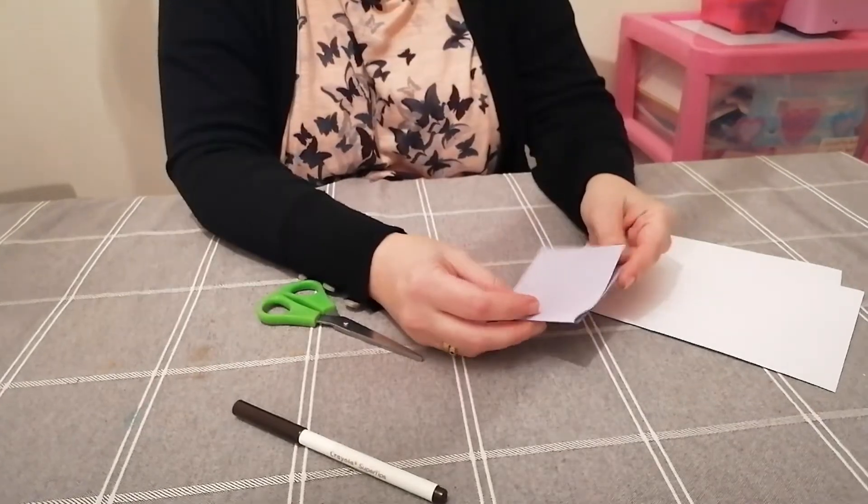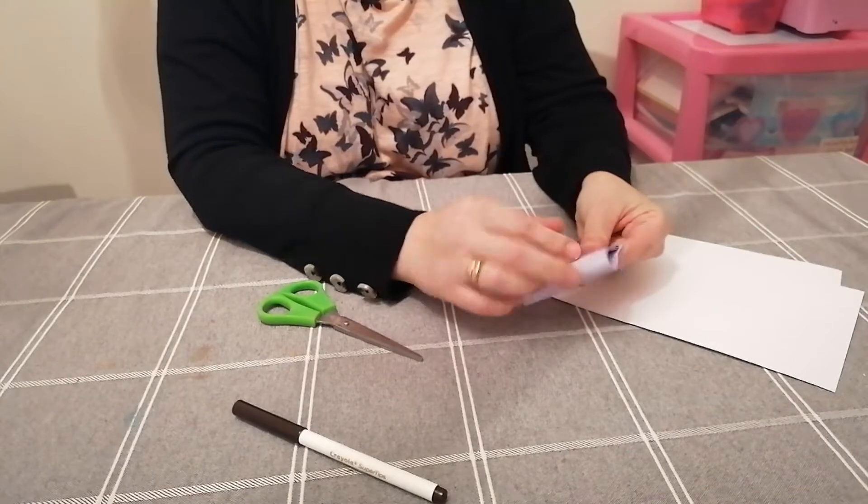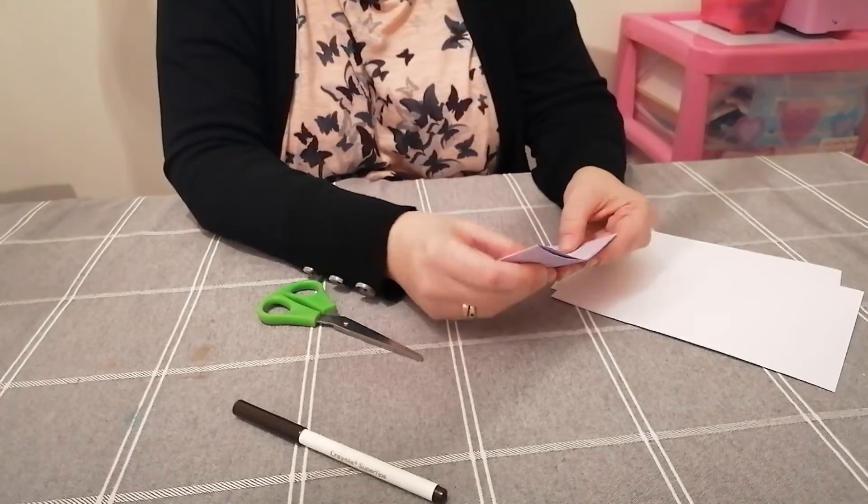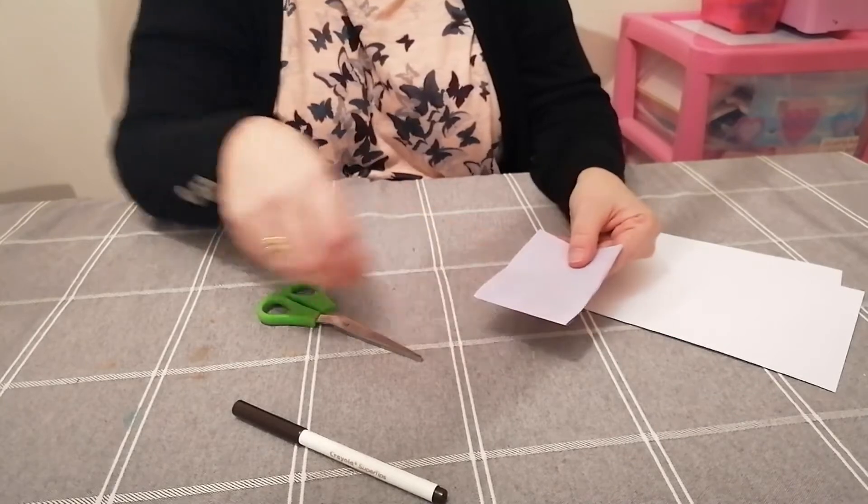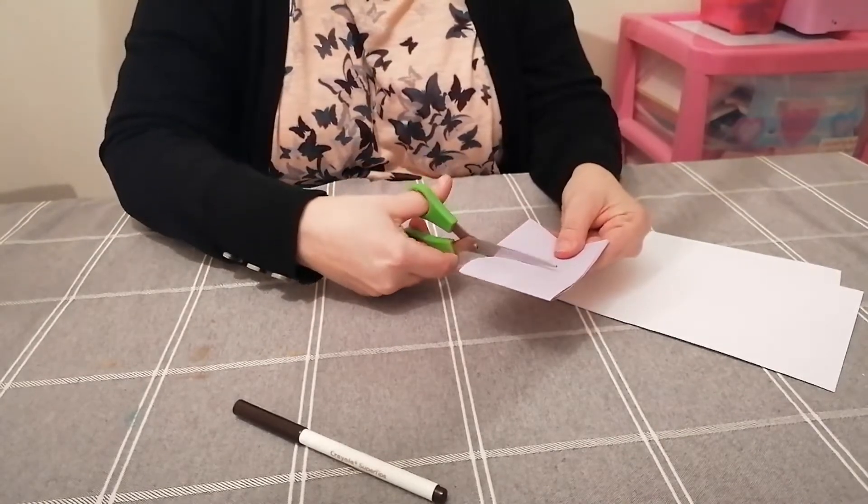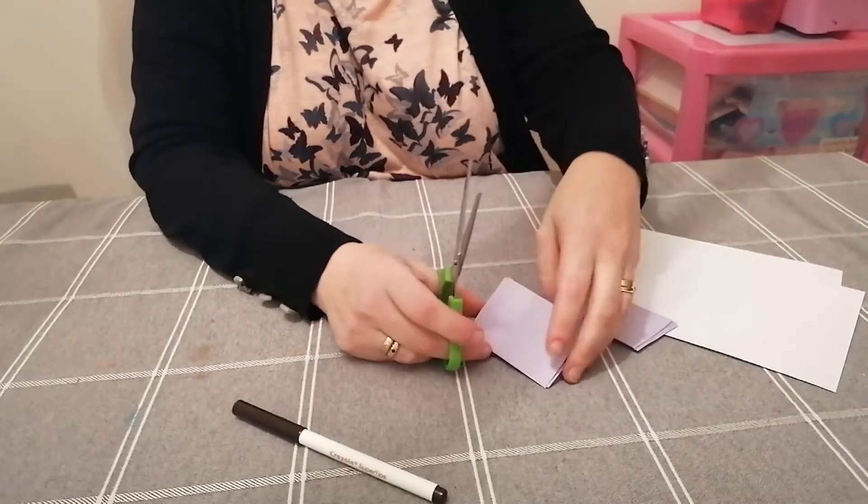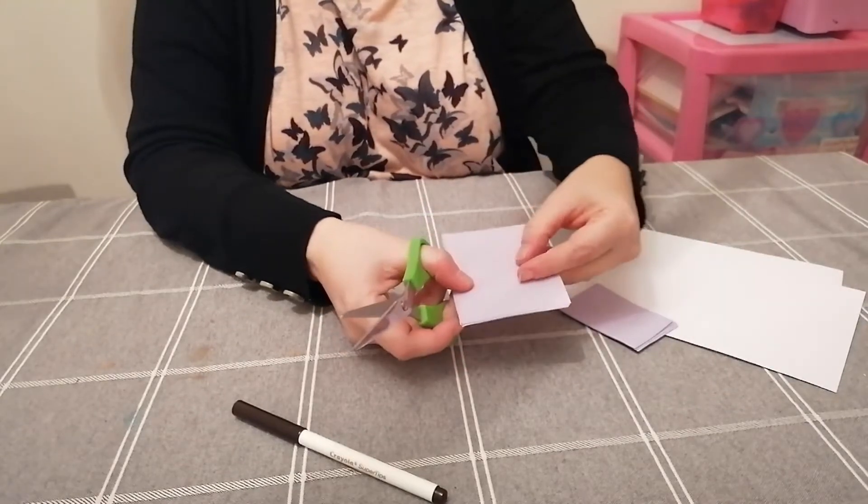So now we're going to fold the strips in half and in half again, so again quarters. Open that out and we're going to cut along the fold line there. Again, it doesn't matter about accuracy at the moment, we just want those individual cards.